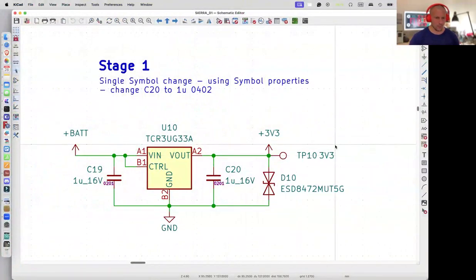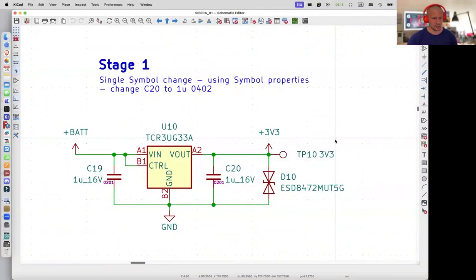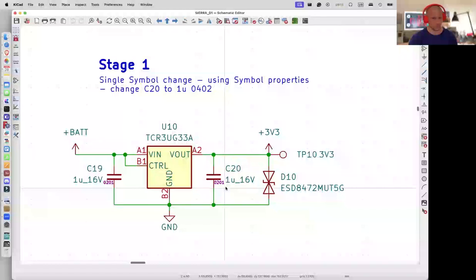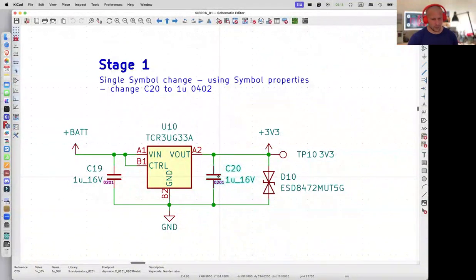Here is stage one. The task is to change C20 to another symbol, another component. Of course, we can delete C20, find another one in the database and place it in the place of C20. But there is a more elegant solution for multiple reasons. I recommend to use the change symbol feature in the properties of the symbol.